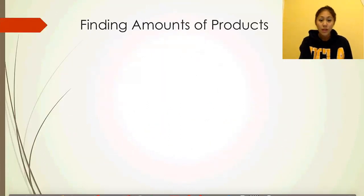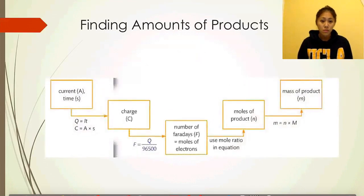A quick summary on finding the amounts of products. We start with current and time that was provided. We use the equation Q equals I times T to calculate the charge. From the charge of electrons, we convert it into the moles of electrons required by dividing by Faraday's constant. We calculate the molar ratio in the half-reaction equation to figure out how many moles of products we need. From then, we can calculate the moles of products and convert it into mass of products deposited by using the mass equation with moles times molar mass.